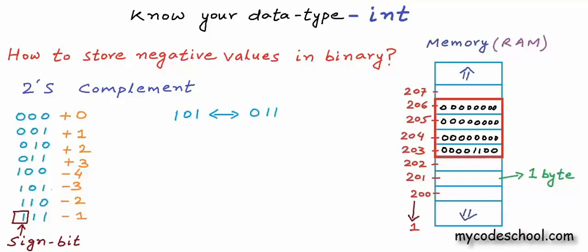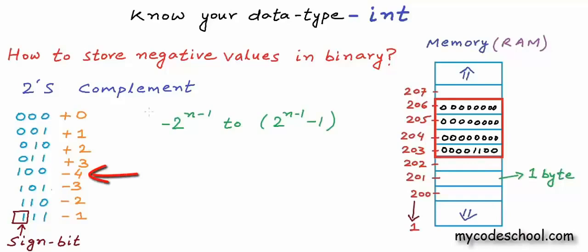In the 2's complement system with n bits, we can store values from minus 2 to the power n minus 1 to 2 to the power n minus 1 minus 1. Compared to the previous encoding, we can store one more value because we don't have two notations for 0. If n is 3, we can have values from minus 4 to 3. So if the result of an arithmetic operation falls outside this range, we'll get an incorrect output due to overflow.